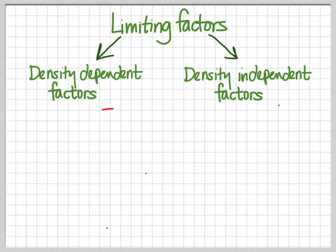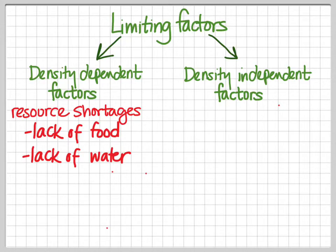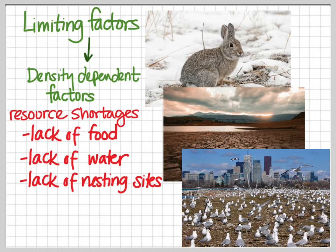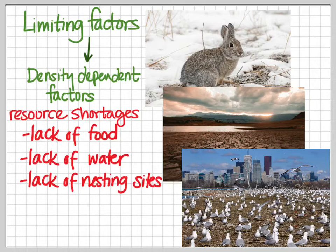So what kind of things make for density dependent limiting factors? A lot of density dependent limiting factors are actually related to resource shortages, such as a lack of food, a lack of water, or a lack of nesting sites. These might be factors that limit a population seasonally, such as herbivores having a hard time getting to vegetation in the winter, or lack of water may be a seasonal issue in places that have a dry season. Lack of nesting sites, of course, is only an issue during the nesting season. But even though these factors may only affect a species or a population for part of the year, they still limit the carrying capacity year-round for that population.